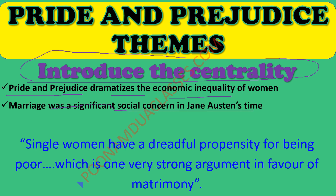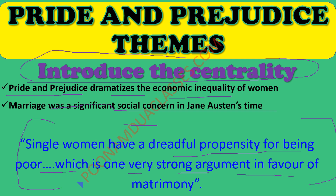Marriage was a significant social concern in Jane Austen's time, and she was fully conscious of the disadvantages of being single. She even wrote to one of her nieces: 'Single women have a dreadful propensity for being poor, which is one very strong argument in favor of matrimony.' In this novel we see a law by which daughters receive no share of their father's property after his death — meaning females were always financially dependent on males, which was the major reason women of that era sought marriage.